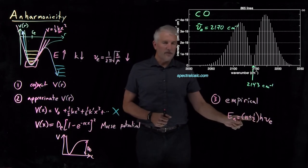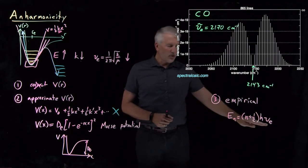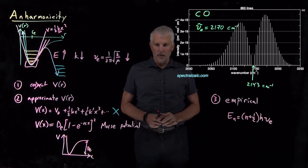Which is that the energy levels are evenly spaced, one half hν or three halves hν or five halves hν. That's what the harmonic oscillator model told us.